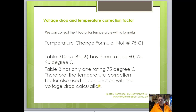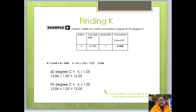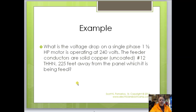Per 310.15(B)(16), there are 60-degree, 75-degree, and 90-degree columns. Table 8 is based on 75 degrees, so the 90° and 60° ratings require adjustments. For 60 degrees, divide by 1.05 — giving 12.25. For 90 degrees, multiply by 1.05 — giving 13.05. Those are the adjusted K factors for different temperature ratings.